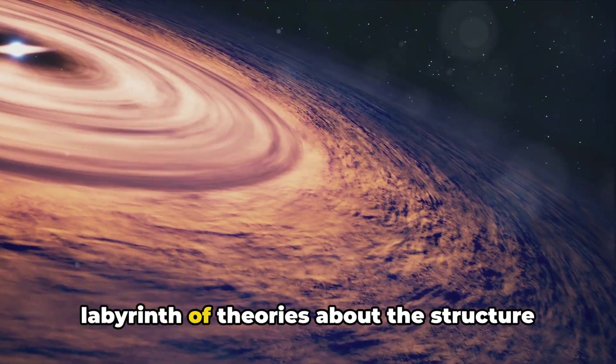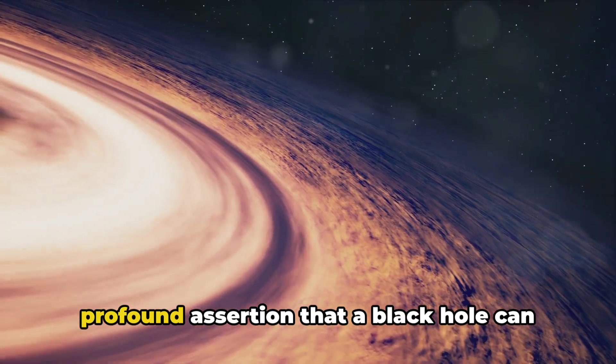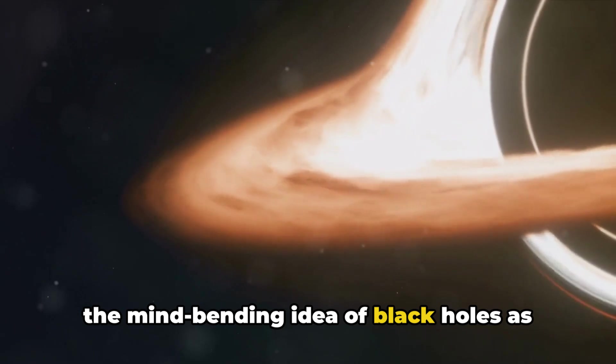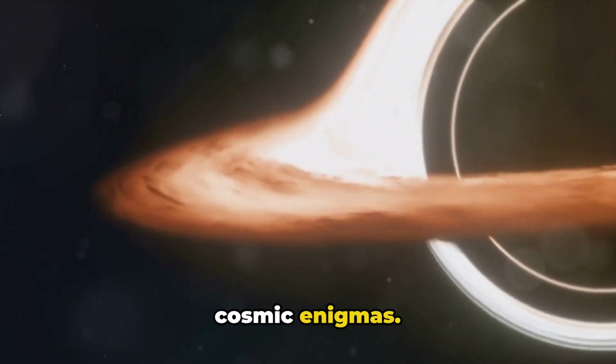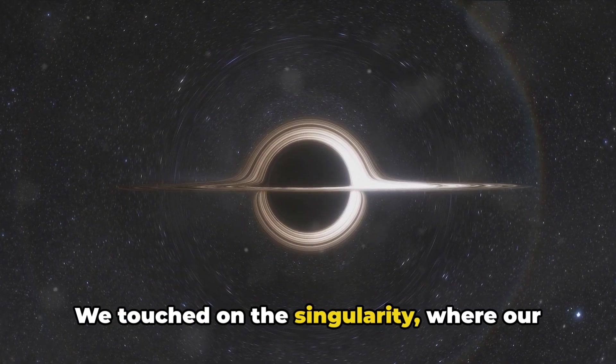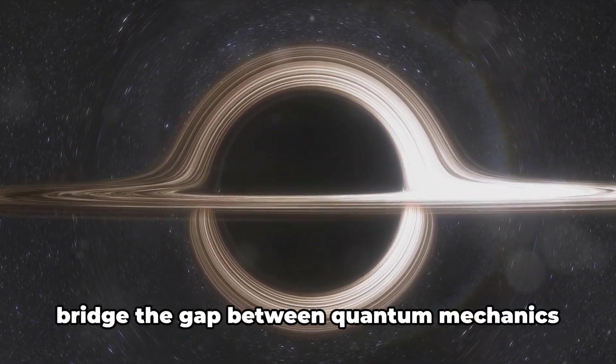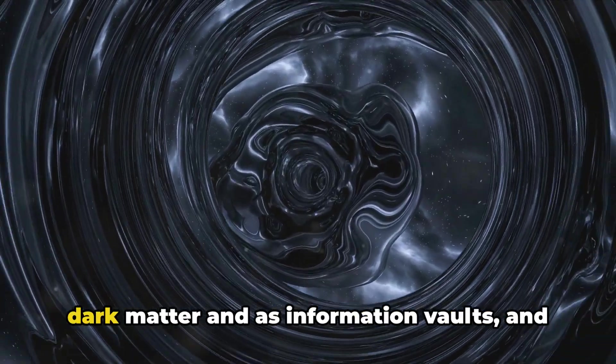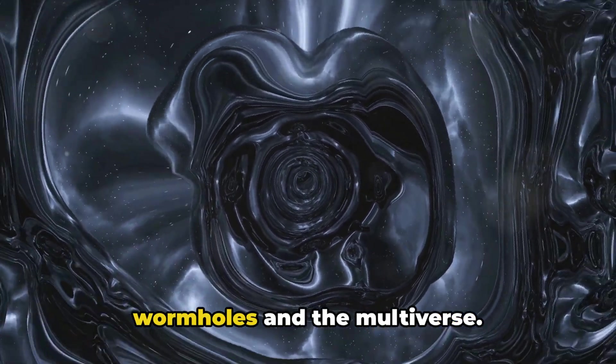We've journeyed through a cosmic labyrinth of theories about the structure of black holes. From the No-Hair theorem's simple yet profound assertion that a black hole can be defined by just three parameters, to the mind-bending idea of black holes as holograms, we've delved into some of the most intriguing hypotheses about these cosmic enigmas. We touched on the singularity, where our understanding of physics breaks down, and the quantum loop gravity that seeks to bridge the gap between quantum mechanics and general relativity. We considered black holes as potential dark matter and as information vaults, and explored the tantalizing theories of wormholes and the multiverse.